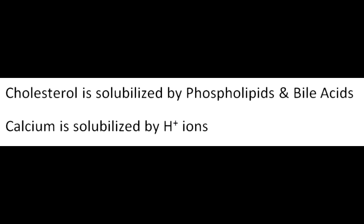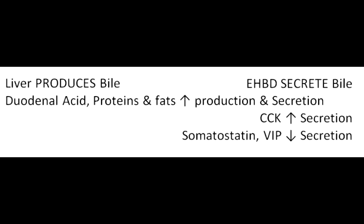In the gallbladder, calcium is solubilized by hydrogen ions which are secreted from the gallbladder mucosa. Phospholipids, bile acids, and cholesterol form micelles which solubilize the cholesterol. The bile is produced by the liver but secreted by the extrahepatic biliary tree. Acids, proteins, and fats in the duodenum increase the production and secretion of bile. Cholecystokinin increases bile secretion only. Somatostatin and vasoactive intestinal polypeptide decrease bile secretion. Thus, somatostatin or VIP-secreting tumors decrease bile secretion, leading to gallstones.